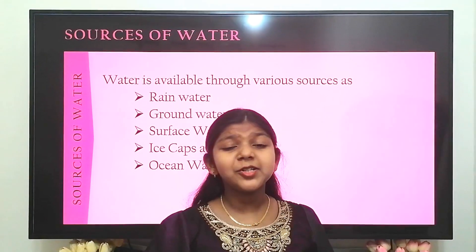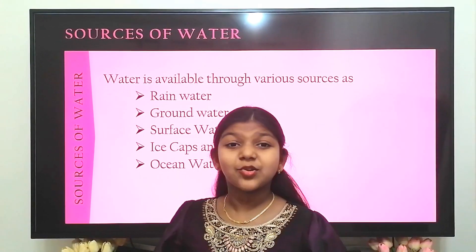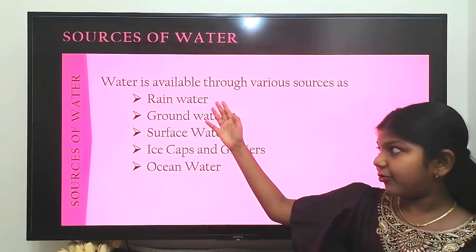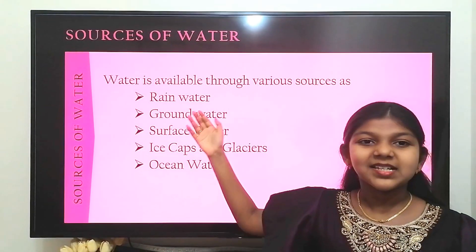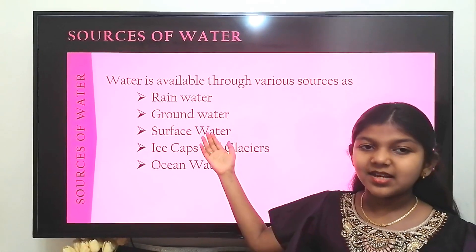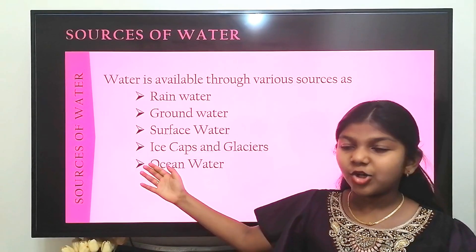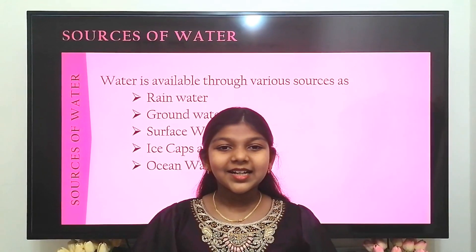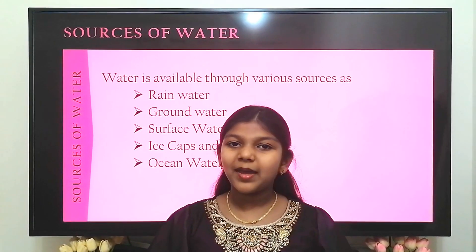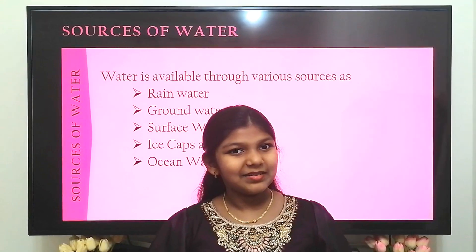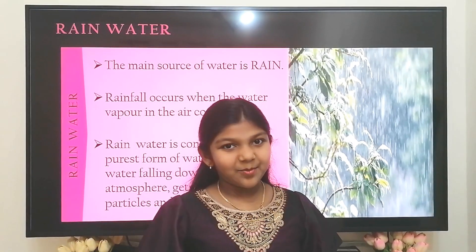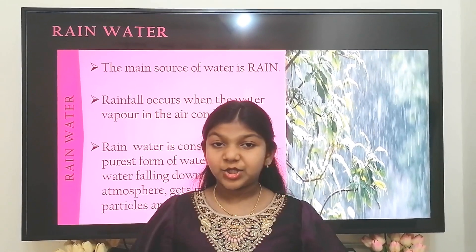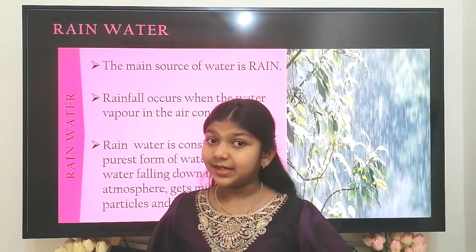Water is available through various sources. Some of these sources are rain water, ground water, surface water, ice caps and glaciers, and ocean water. Let us see these sources of water one by one in detail. First, we are going to see about rain water. The main source of water is from rain.